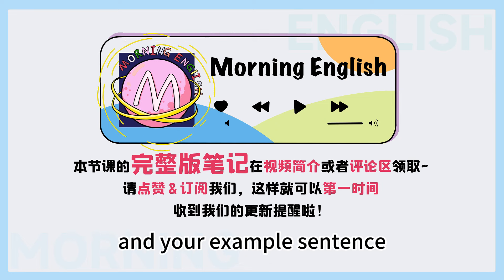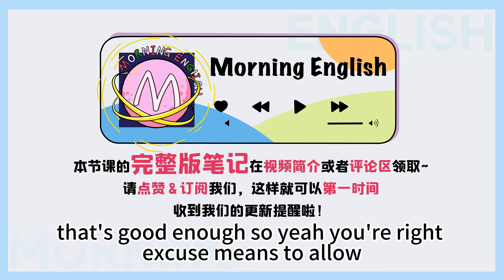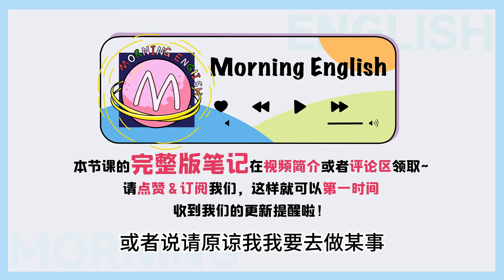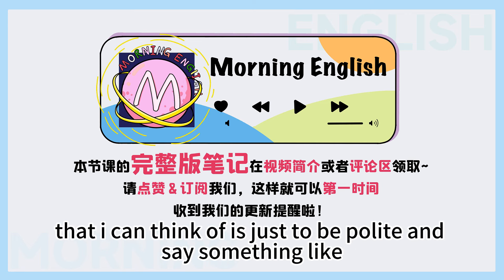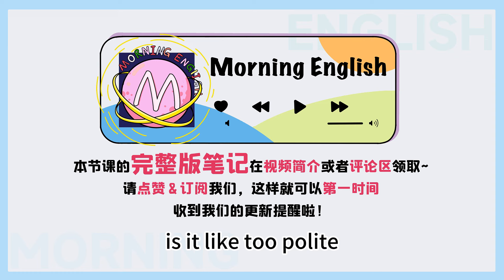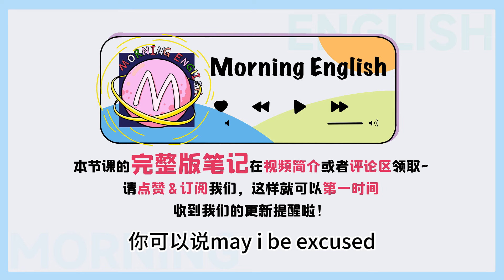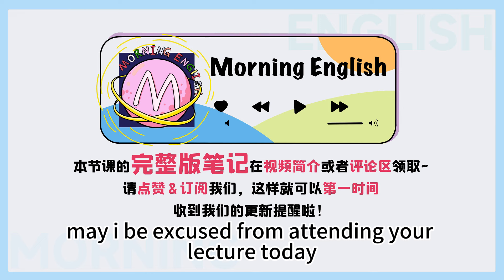How about one example for the verb? 'Excuse me, I'm sorry for being late.' Excuse means to allow. 所以它作为动词用的时候,就是请允许我做某事,或者请原谅我要去做某事。The most normal way to use it is to be polite and say, 'May I be excused?' 作为第一种用法呢,你可以说may I be excused。比如说,'May I be excused from attending your lecture today?' 我今天能不能不去参加你的讲座呢?